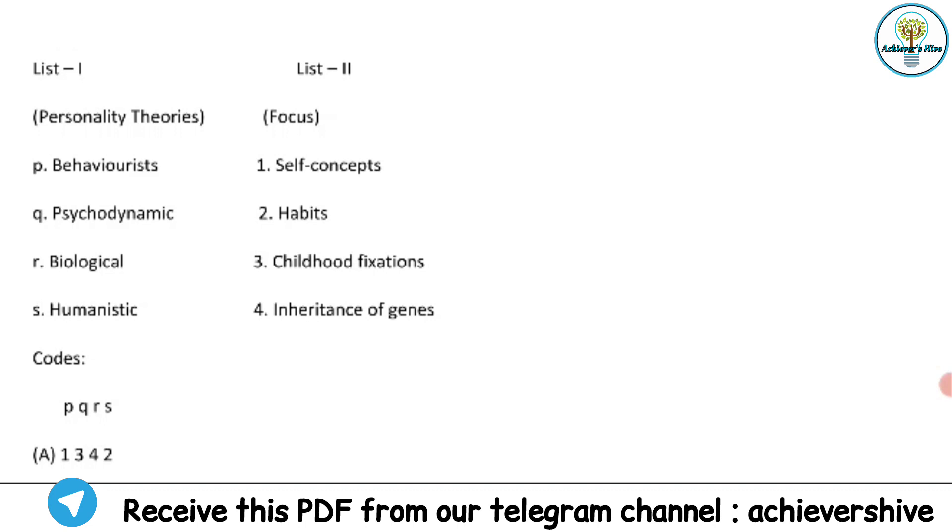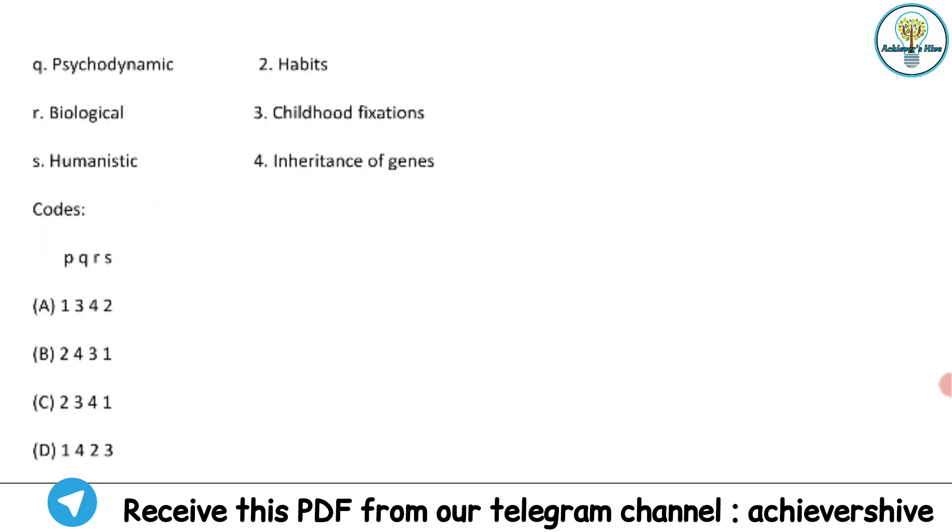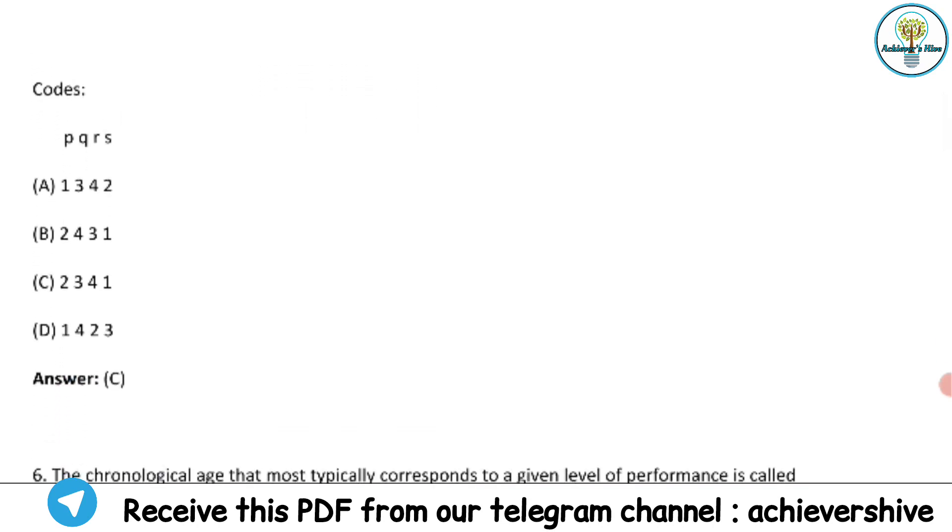Psychodynamics - what was the central part of the theory? So that central part is written on the right hand side on the list too. So when we try to match the list with each other we find the correct answer as 2 for behaviorist, 3 for psychodynamics, 4 for biological and self-concept for humanistic. So we should have the correct answer as 2, 3, 4, 1. Let's see if we have this answer. Yes we have C. So C has to be the correct answer.